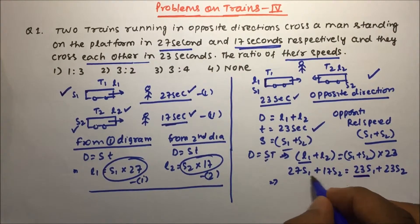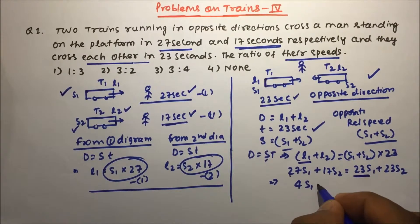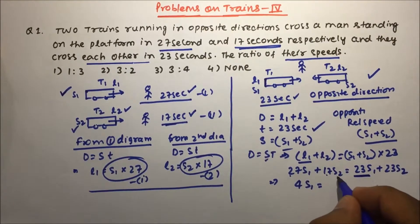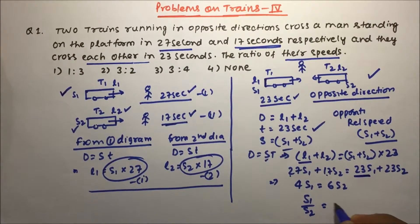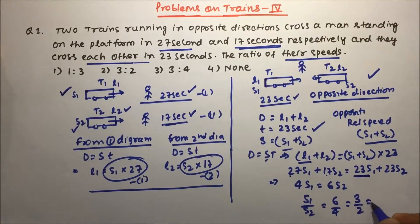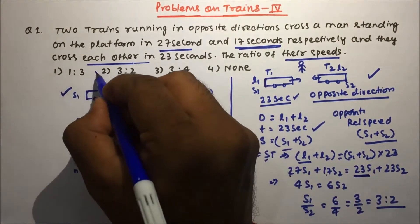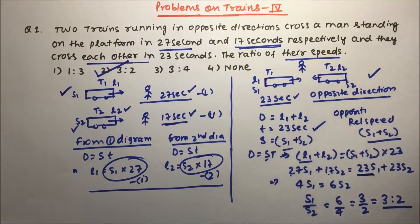Bringing S1 terms to the left: (27 − 23)S1 = (23 − 17)S2, giving 4S1 = 6S2. Therefore S1/S2 = 6/4 = 3/2. The ratio of their speeds is 3:2, which is option number 2.